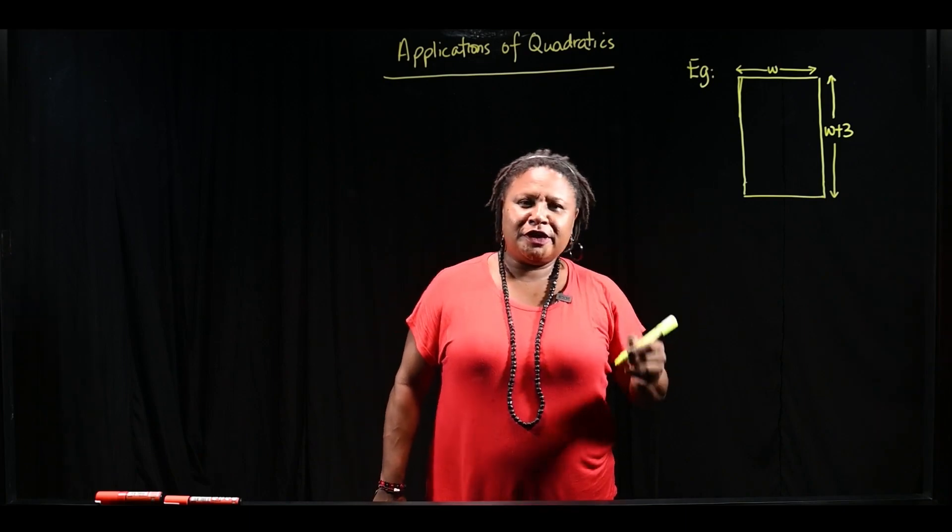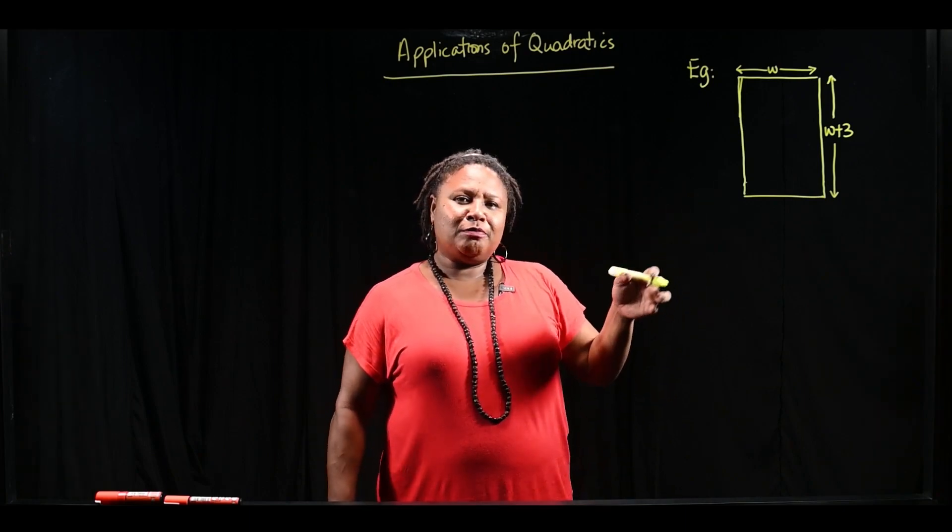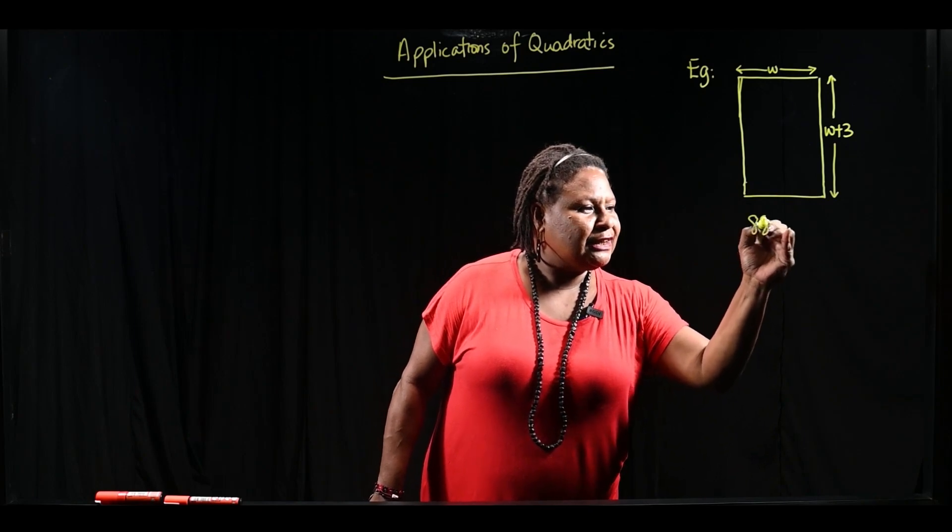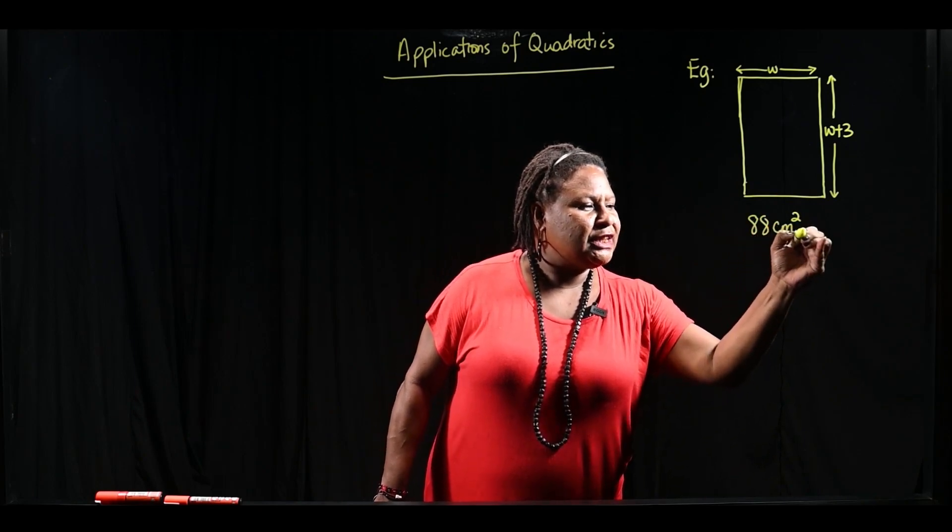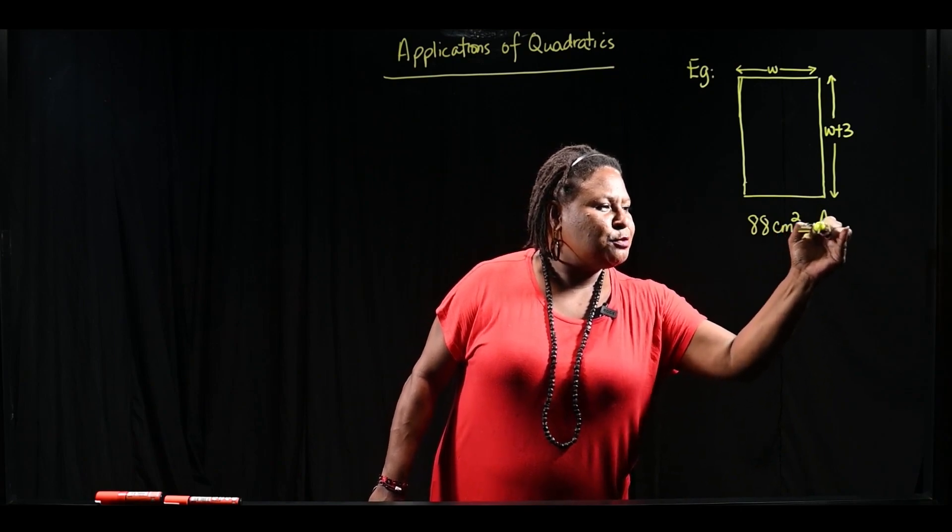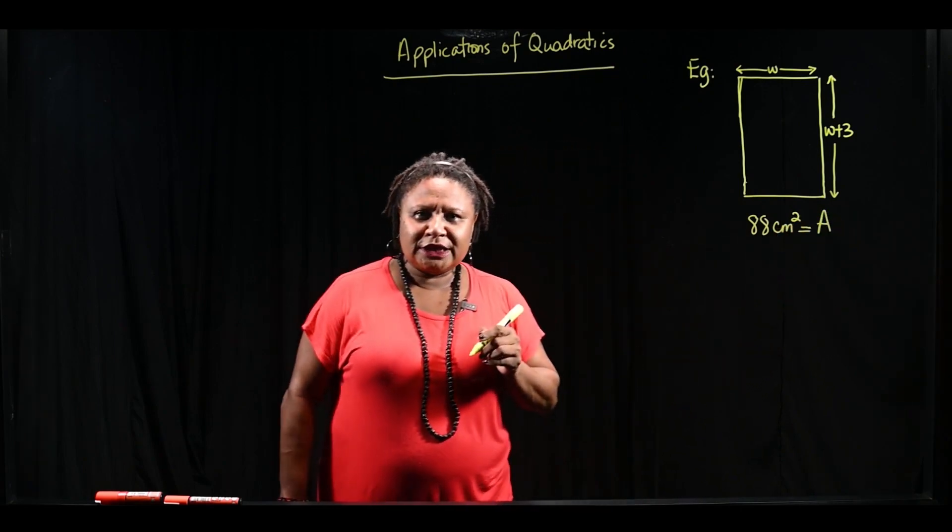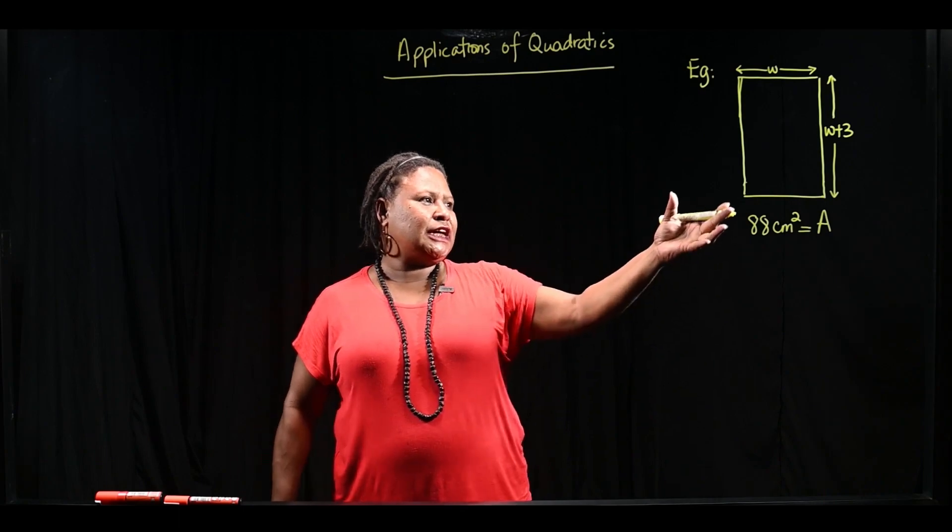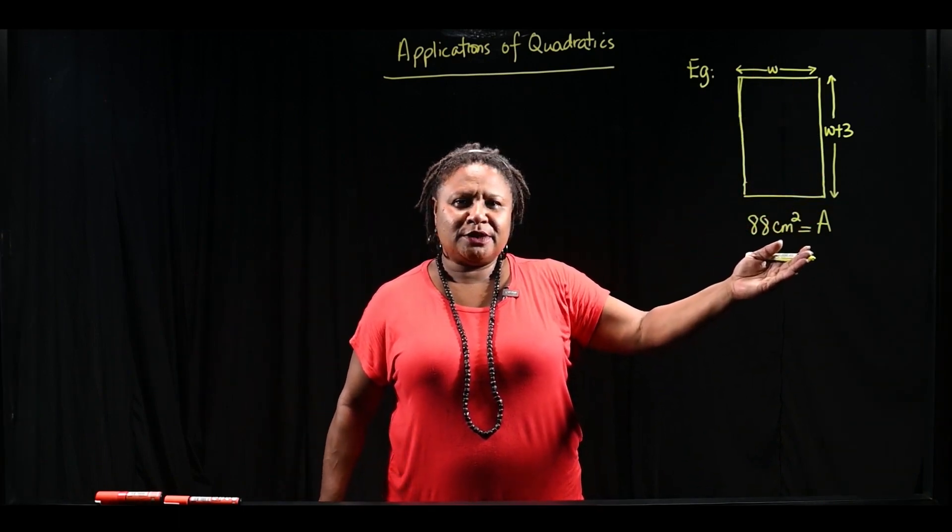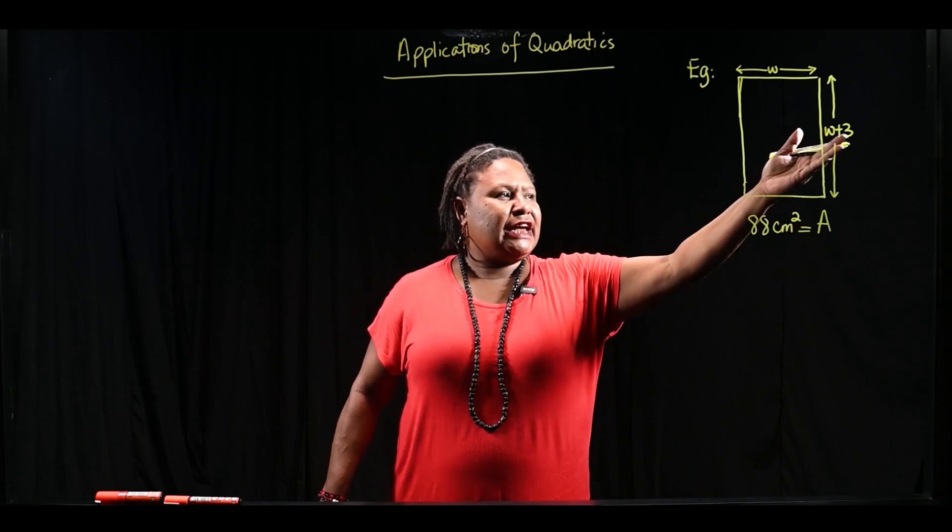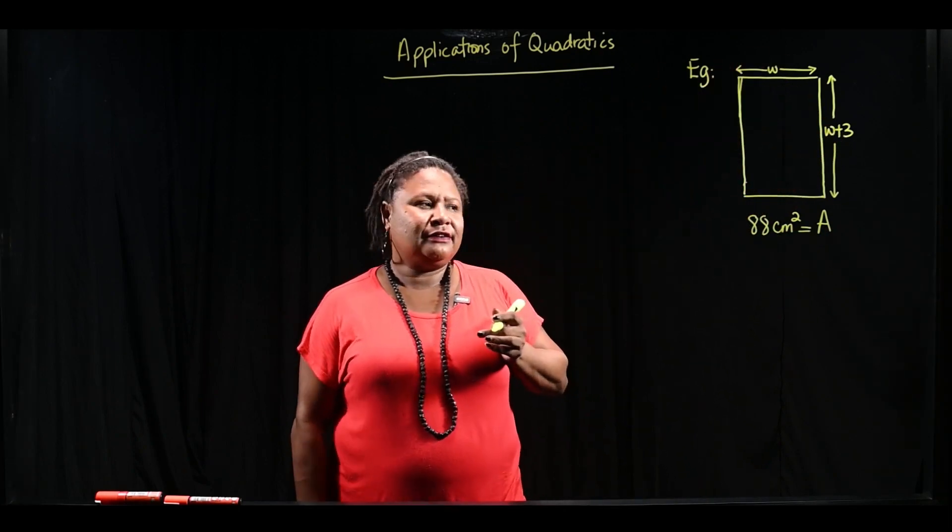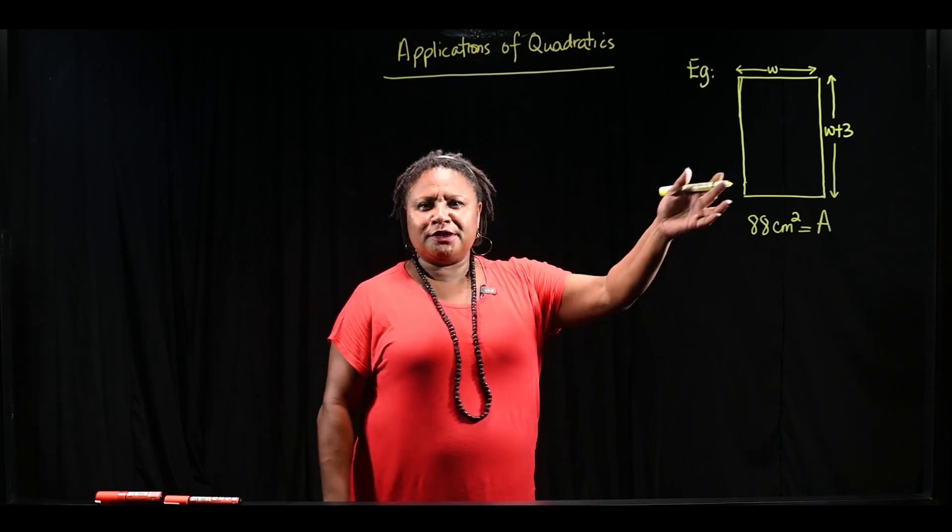On top of all that information, this advertising company needs to make the leaflet 88 square centimeters. Its area needs to be 88 square centimeters. So this is the information we have. The leaflet needs to be 88 square centimeters. Its length is 3 centimeters longer than it is wide.